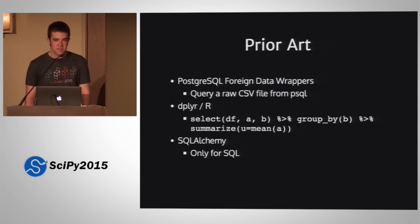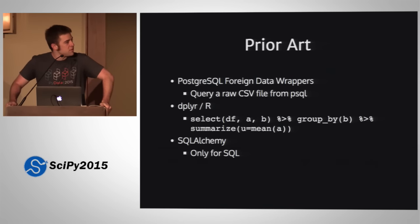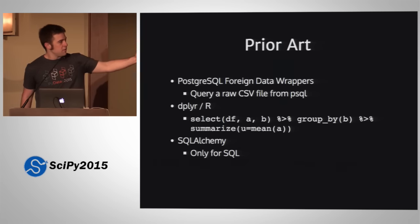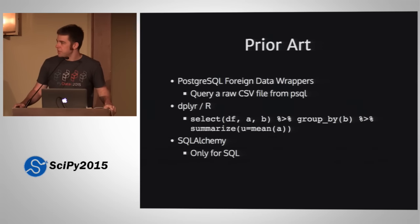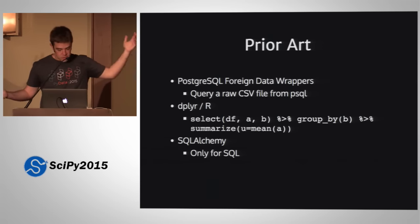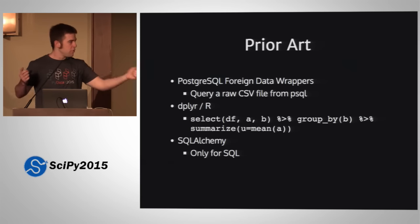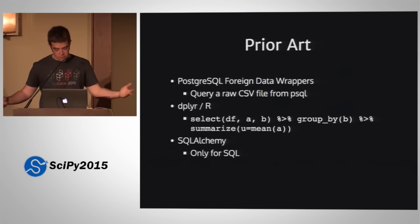There's a nice feature of Postgres called Foreign Data Wrappers, which lets you do things like query a raw CSV file with SQL. R has had dplyr for about a year and a half, and it lets you write syntax that pipes SQL-like operations — so you select the A and B columns from your data frame, send that to group by, group on B, and take the average of A by B.